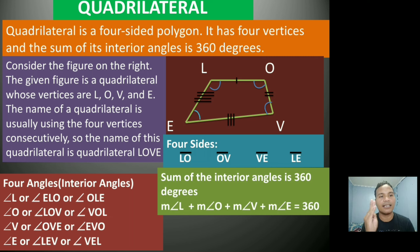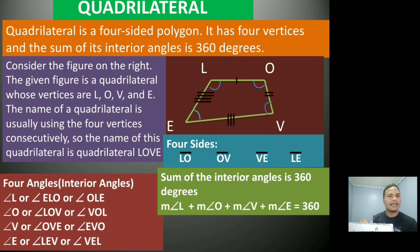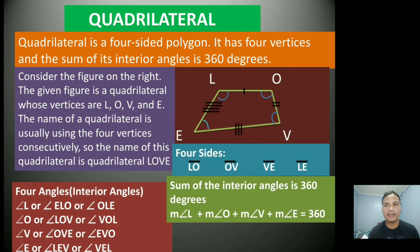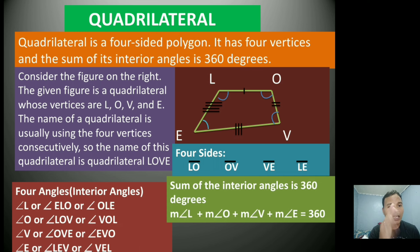The first angle written is angle L, or it could be named angle E-L-O or angle O-L-E. It is safe to name an angle using one letter if the vertex is shared by only one angle. In our figure, all vertices — L, O, V, and E — share only one angle, so it is safe to name each angle with one letter.